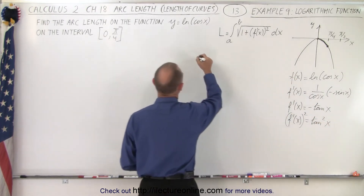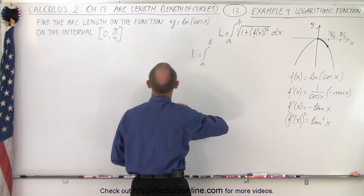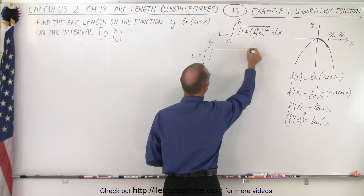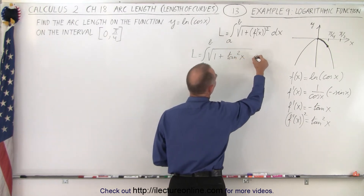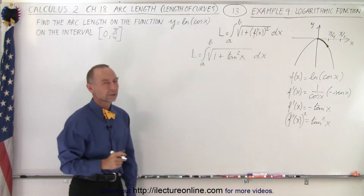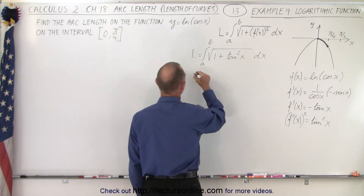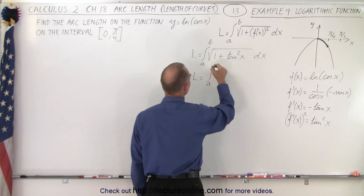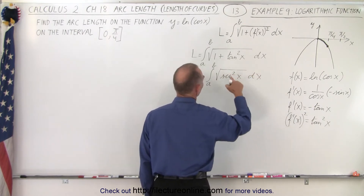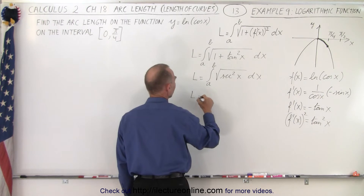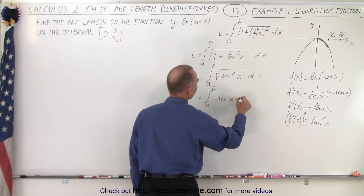That gets plugged in, so the arc length is equal to the integral from a to b — we'll plug in the limits later — of the square root of 1 plus the tangent squared of x dx. Now, 1 plus tangent squared of x equals secant squared of x, so L is equal to the integral from a to b of the square root of secant squared of x dx. The square root undoes the square, so L equals the integral from a to b of secant of x dx.